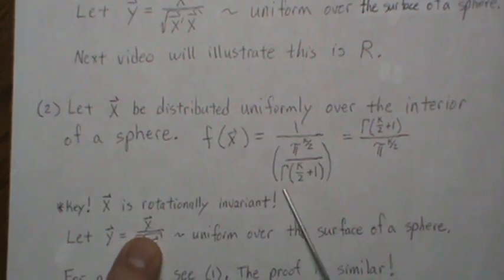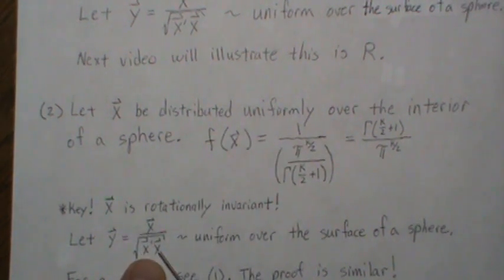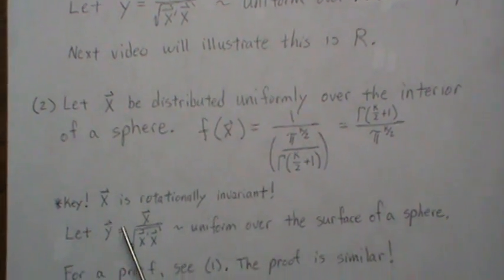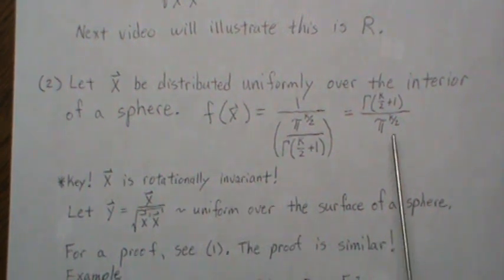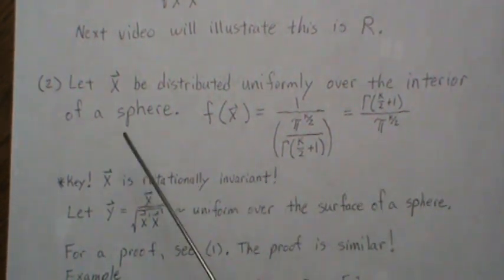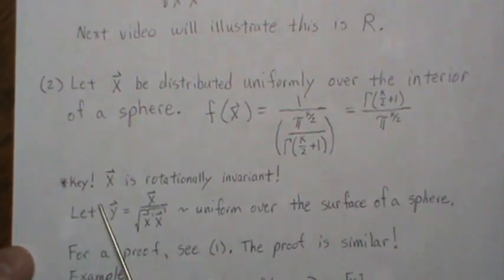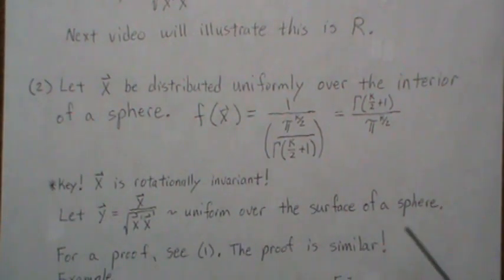If X is uniformly distributed on the interior of this sphere, you normalize it: take the square root of X-transpose-X and divide each component of the X vector by that, and then the new vector Y is uniform over the surface of a sphere. The proof is very similar to what we did for the multivariate normal — instead of calling it a multivariate normal, we call it the uniform distribution over the interior of a sphere. I'll refer you back to part one, the video transforming a multivariate normal to a uniform distribution.